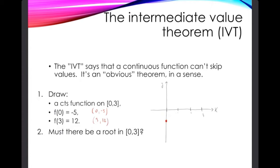So here's the first one: zero minus five. And then three comma twelve. And now I want you to draw a continuous function on [0,3]. I want you to draw a continuous function passing through these two points.